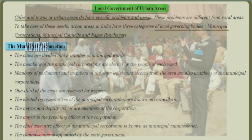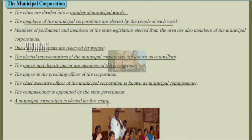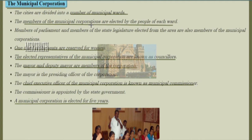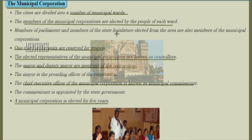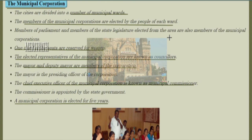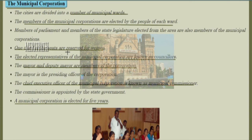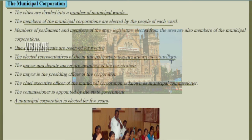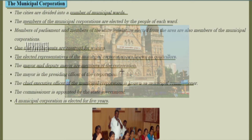Let's study in detail about these three local governing bodies. Cities are divided into a number of municipal wards, and the members of municipal corporations are elected by the people of each ward. Members of Parliament and members of the state legislature elected from that area are also members of the municipal corporation. One third of these seats are reserved for women. The elected representatives are known as councillors, and the mayor and deputy mayor are also members of the corporation.